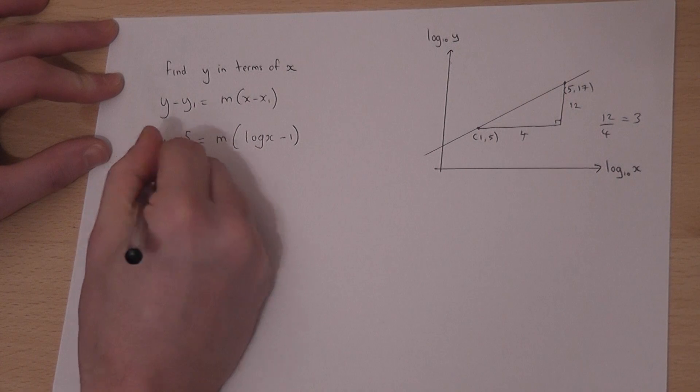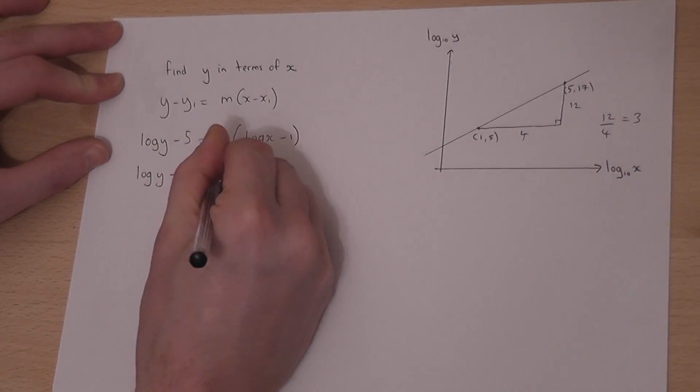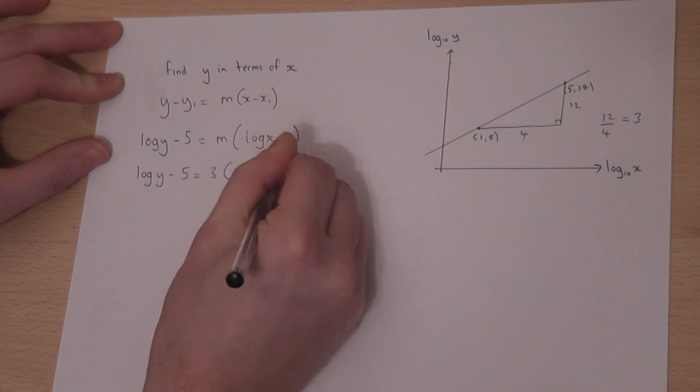So, log y minus 5 equals 3 bracket log x take away 1.